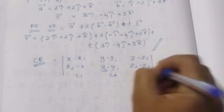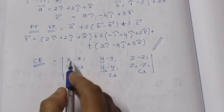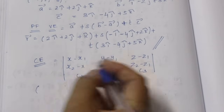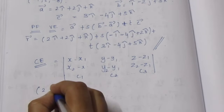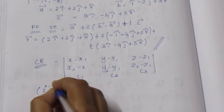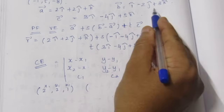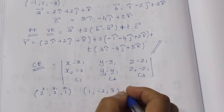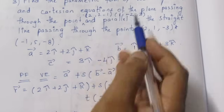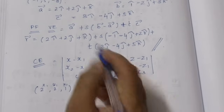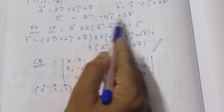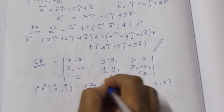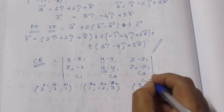The point x1, y1, z1 is (2, 2, 1). The B point is (1, minus 2, 3) giving x2, y2, z2. The C vector direction ratios are (3, minus 4, 5), giving c1, c2, c3.